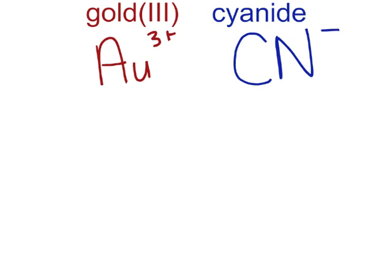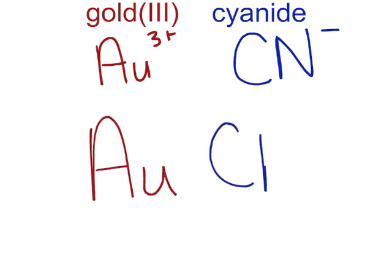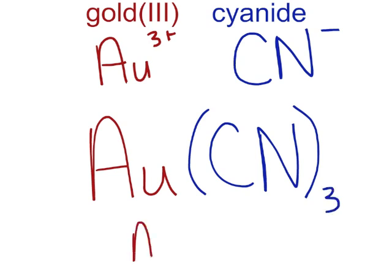So I need 3 negative 1 charges to balance the one positive 3 charge. So the formula for gold(III) cyanide would simply be Au—CN, not CN₃—but I've got to put parentheses around the CN, then the 3.